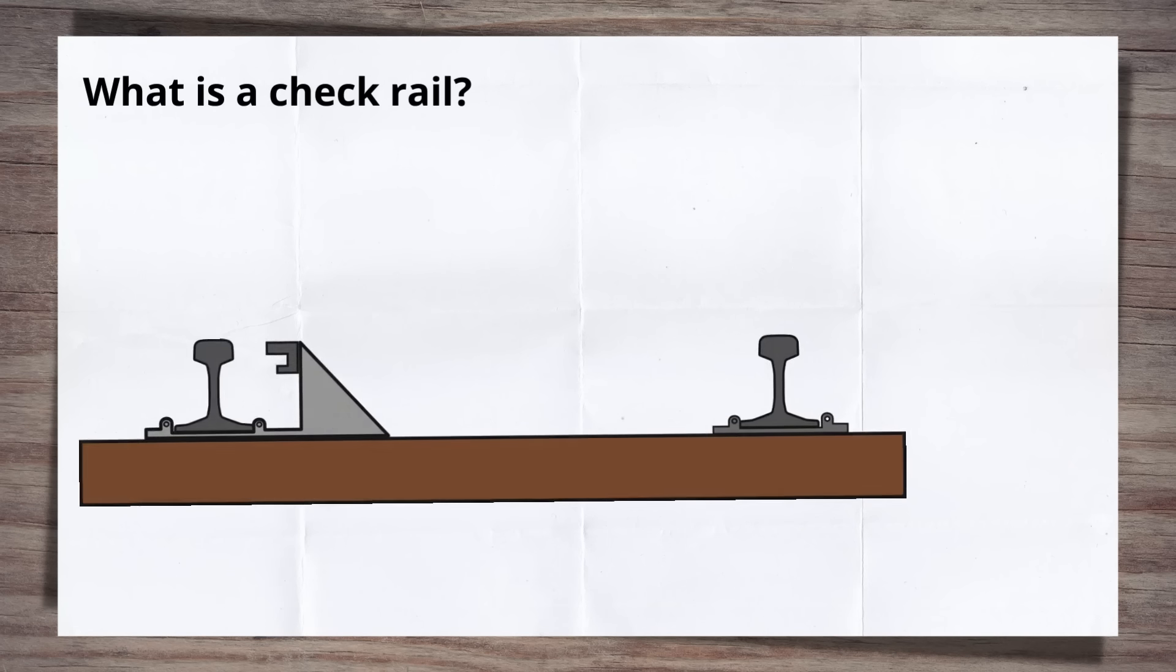When looking at checkrails there are some key measurements you need to know. First is check gauge. This is the distance between the running rail and the face of the opposite checkrail. Then there is the flangeway gap. This is the gap that allows the wheel flange to pass between the checkrail and the running rail it's next to. This is also sometimes known as free wheel clearance.